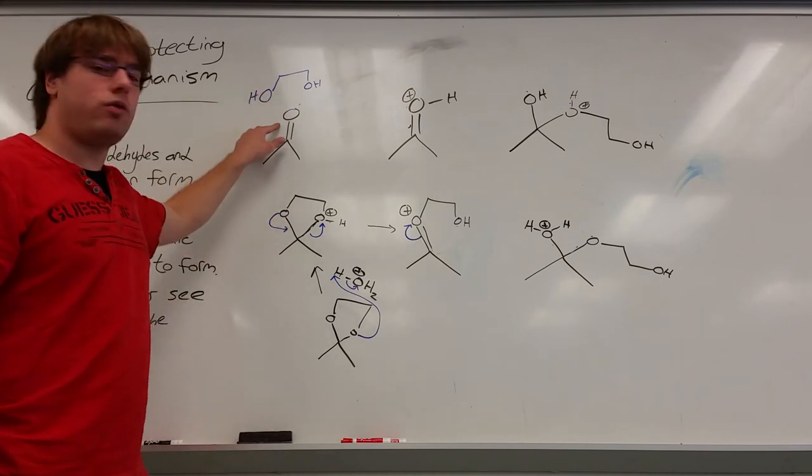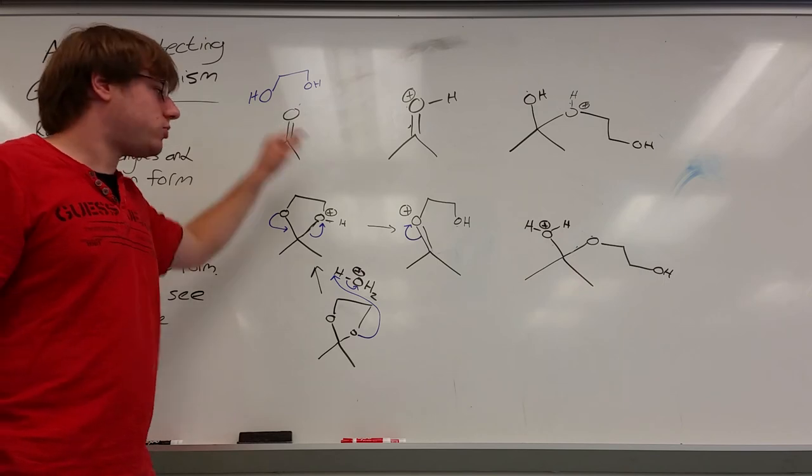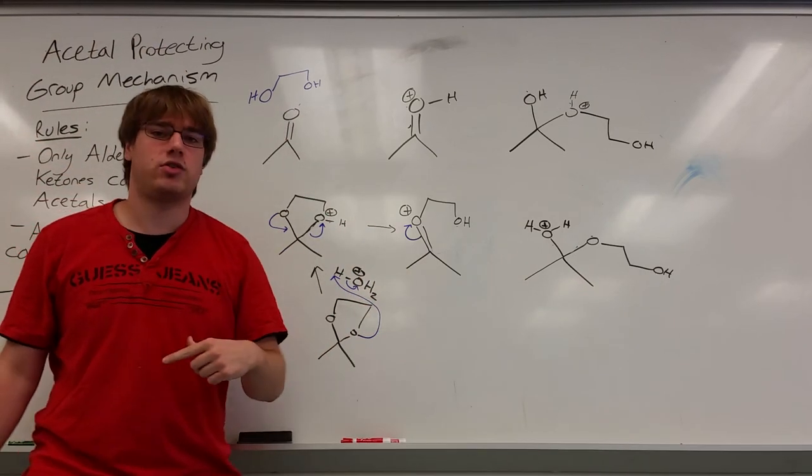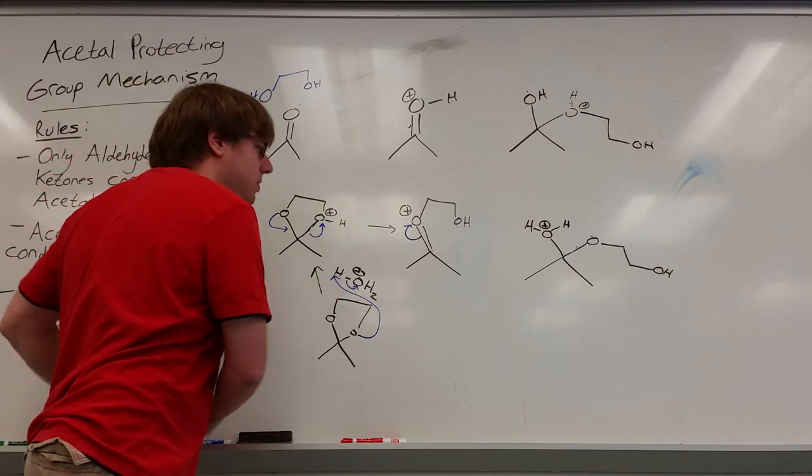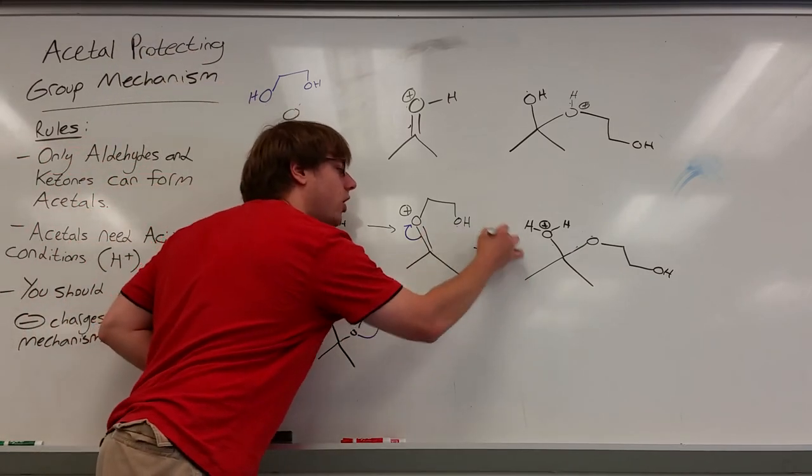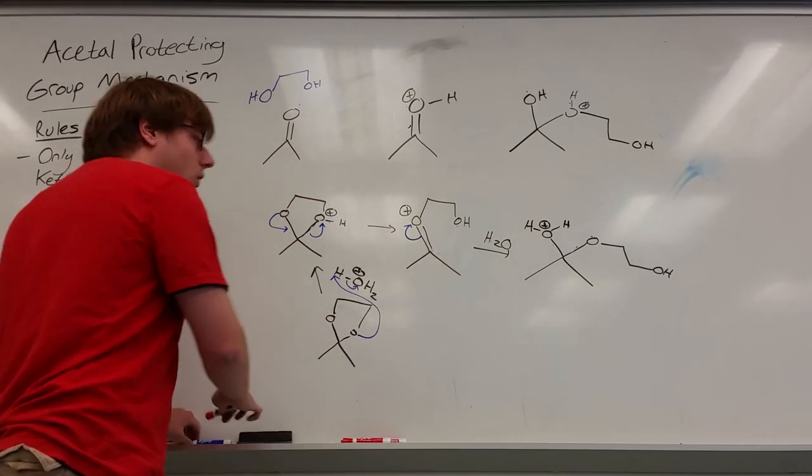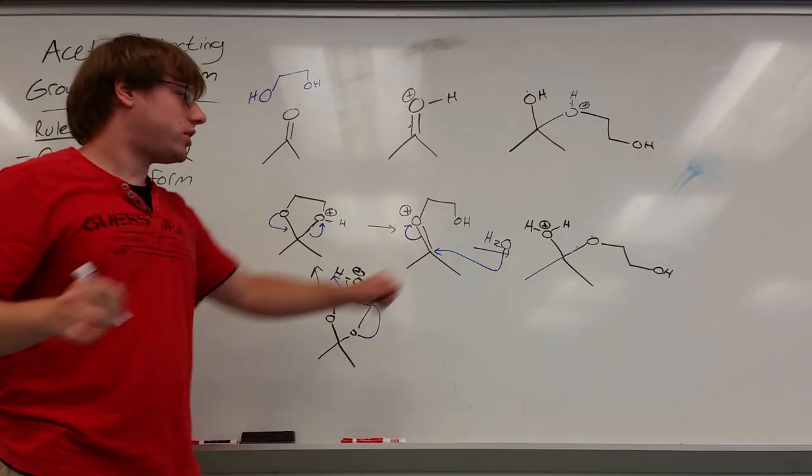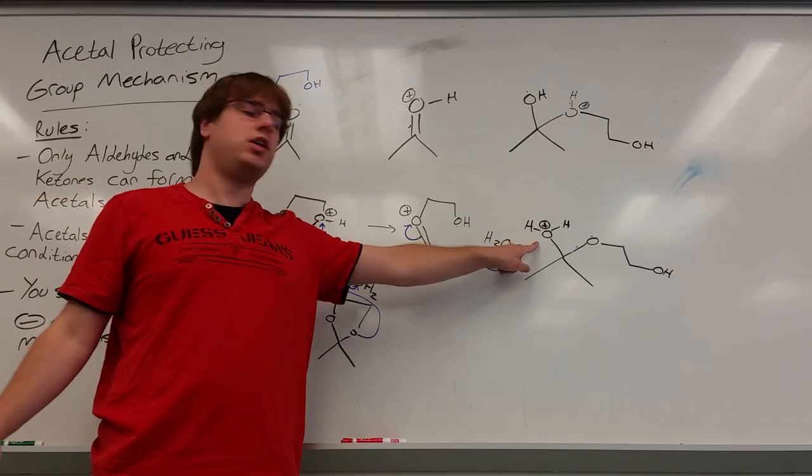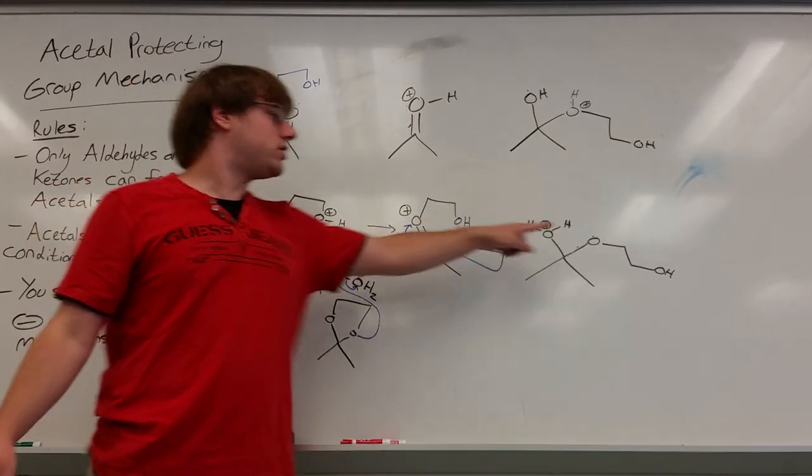Remember there's a total of three oxygens involved in this reaction. Two from your diol and one from your starting carbonyl. Which means we need to bring in that third oxygen. Namely we need to bring in water. So what happens in our next step is some water is going to float in and that is going to be what attacks your double bond O. And so that's how we get H2O positive over here and this oxygen is now neutral.